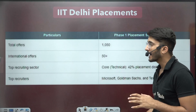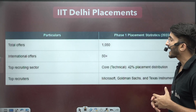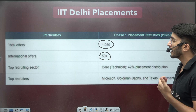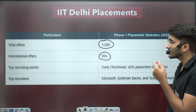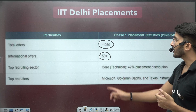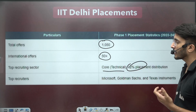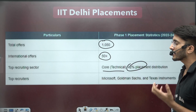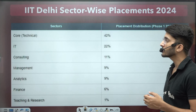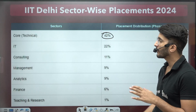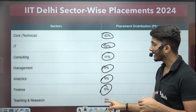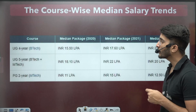Regarding the placement part, from past year data, IIT Delhi had 1050 students receive a total offer, with 50 plus students receiving international offers in Phase 1 placement. Phase 2 and Phase 3 placement are ongoing till the end of the final semester. For top recruiting sectors, core technical accounts for 42% of placement distribution, IT 22%, consulting 11%, management 9%, analytics 9%, finance 9%, and teaching and research 1%.